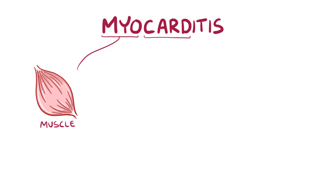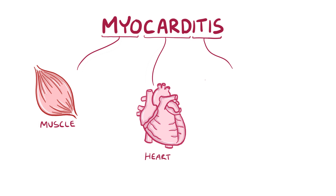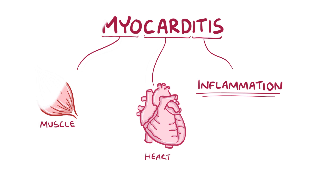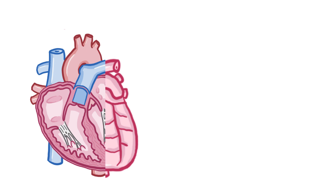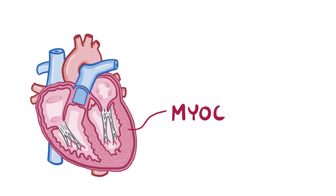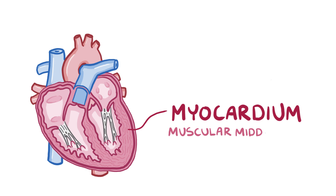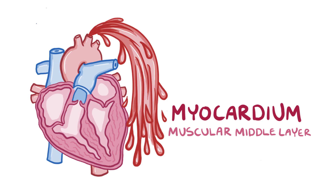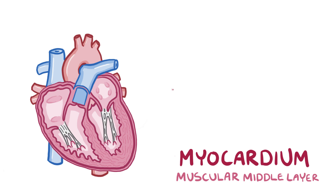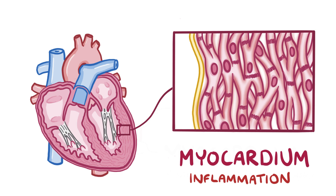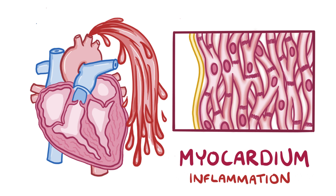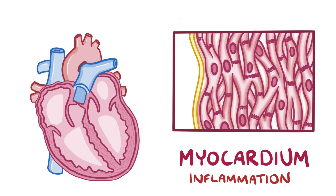With myocarditis, 'myo' means muscle, 'card' means heart, and 'itis' means inflammation. So myocarditis is inflammation of the myocardium, which is the muscular middle layer of the heart wall that contracts and relaxes so the heart can pump blood around the body. Inflammation in the myocardium causes swelling and damages the heart muscle cells' ability to contract.